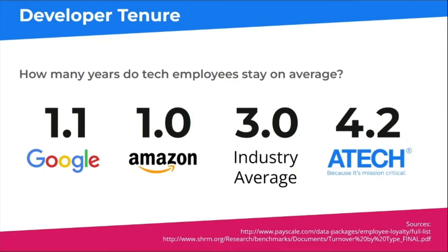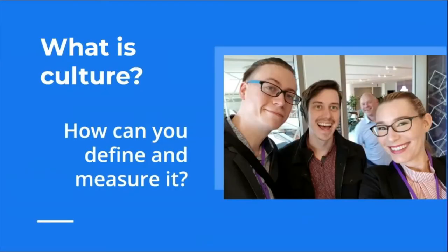We've done really well at creating a good culture at A-Tech. Developer tenure — how many years tech employees stay in your organization on average — is a useful measure. As you can see, some of the best companies in the world don't have great tenure for their developers: Google's developers stay on average only 1.1 years. At A-Tech we're well above industry average. Because we had such good tenure and talented employees, they started to ask questions, so I would ask my team why they'd chosen to work at A-Tech. One of the most common responses was 'it's the culture.' I used to think — what exactly is culture, what does that mean? I started asking more and more questions, because if the culture is really good, how do we make sure we protect that and continue to have a good culture?